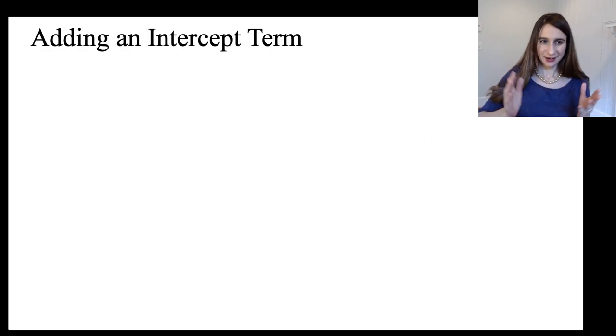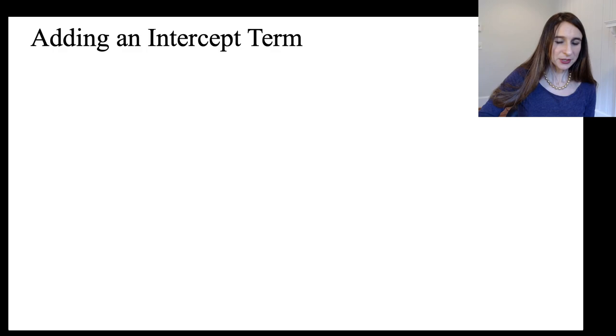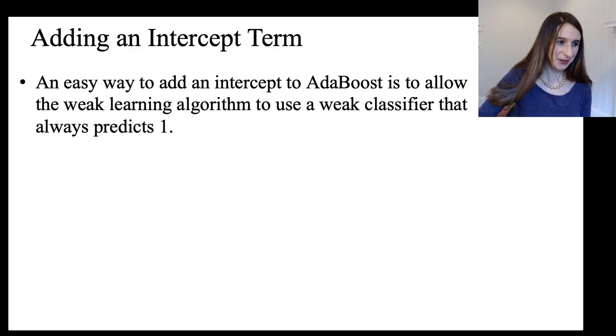Okay, an intercept term. Now, as you may have noticed, AdaBoost doesn't automatically necessarily have an intercept term in it. So there are really easy ways to get an intercept term. And the first way is just to allow the weak learning algorithm to produce a weak classifier that's always one.